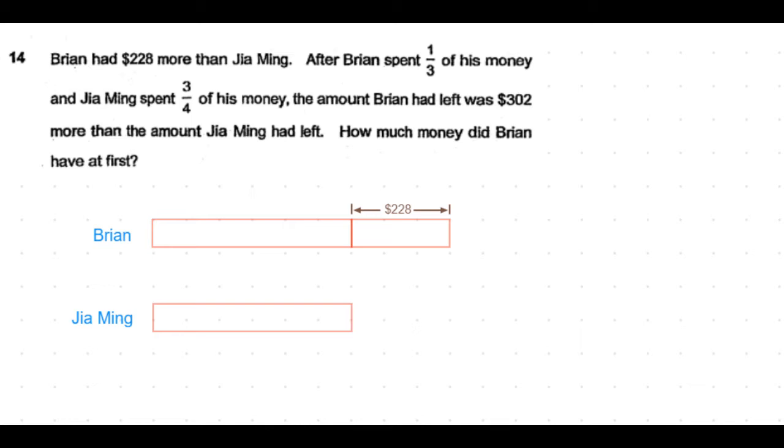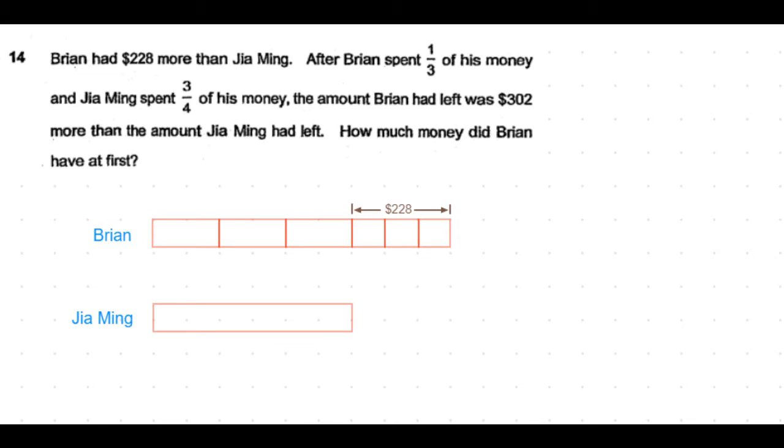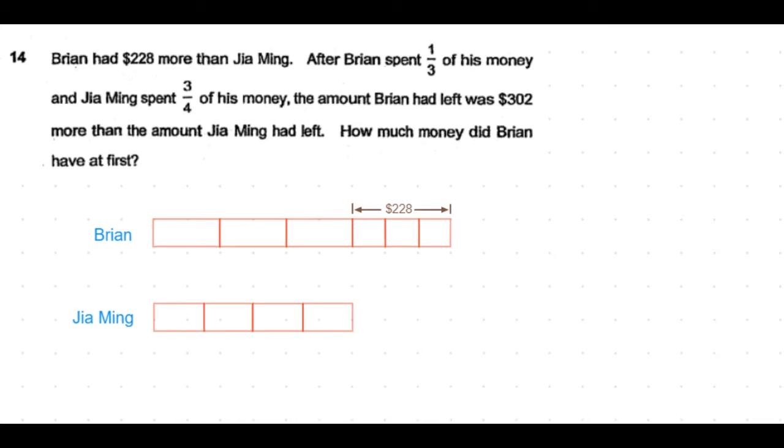So let's mark the $228 into three parts and also the first section into three parts. Jia Ming spent 3/4 of his money, so Jia Ming's part should be divisible by 4.